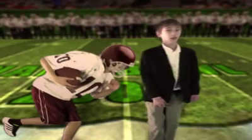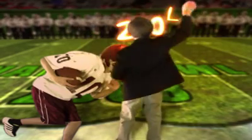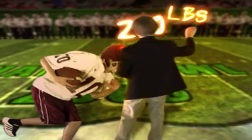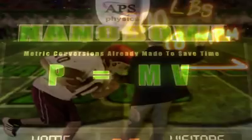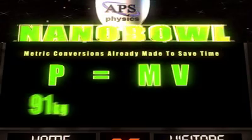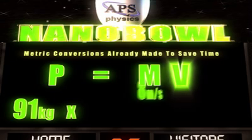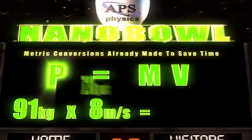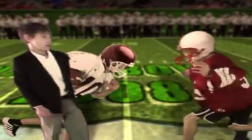Let's determine the momentum of this 200-pound running back if he is moving at 18 miles per hour upfield. After converting to metric, we multiply the mass and velocity. The player's momentum is 728 kilogram meters per second.